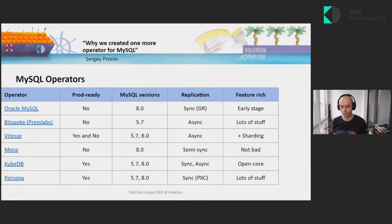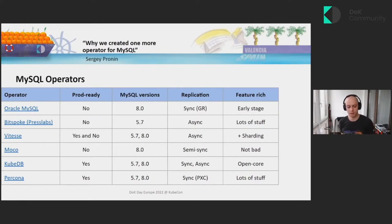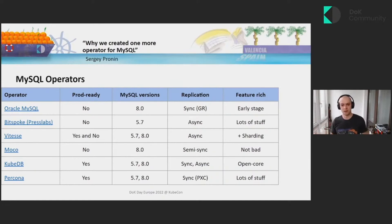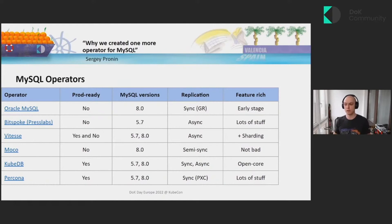Another one is Moco. This operator was developed by a company in Japan for internal use, and they claim: don't use it in production — we just did it for ourselves. But surprisingly, it's pretty feature-rich with good structure and good architecture. Interestingly, the choice they made is to use GTID SemiSync replication, and only MySQL 8. I'm not sure why they chose SemiSync, because it does not provide the data consistency you should be looking for — especially in the Kubernetes world, which makes it tricky.